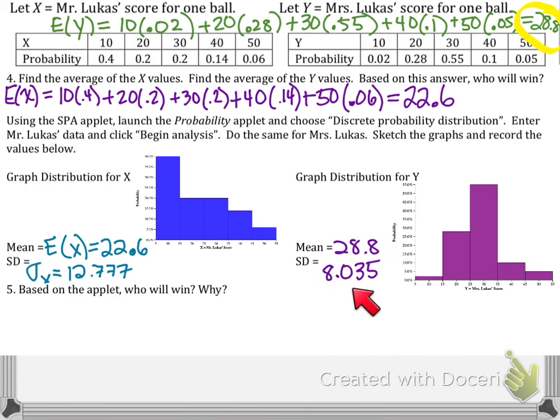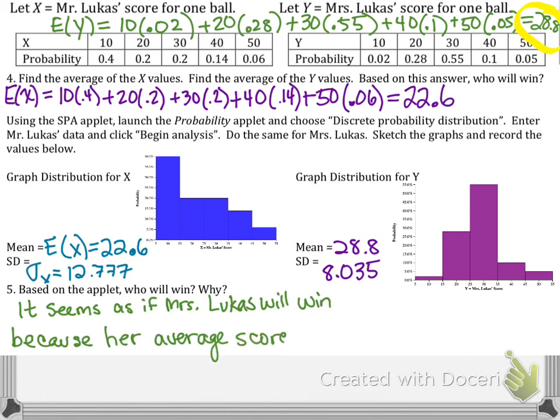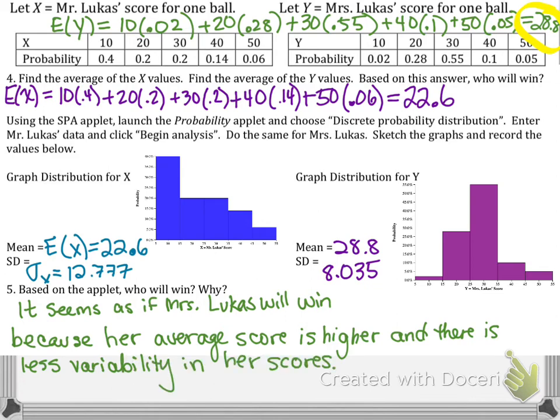So notice that my scores, Mrs. Lucas' scores, are higher on average with less variability. Most of my scores lie in here in the 20 to 40 range, whereas Mr. Lucas' scores, he has a lot of lower scores, which increases standard deviation, even though he did have a higher tendency of 40s and 50s. So based on the applet, it seems as if Mrs. Lucas will win, again, because her average score is higher and there is less variability in her scores than in Mr. Lucas'.